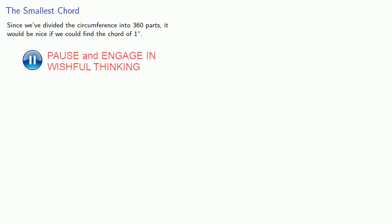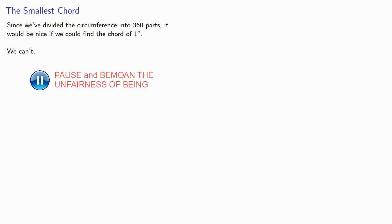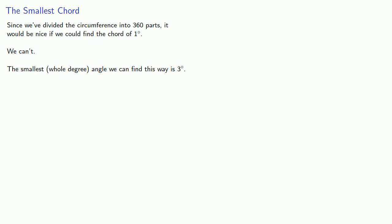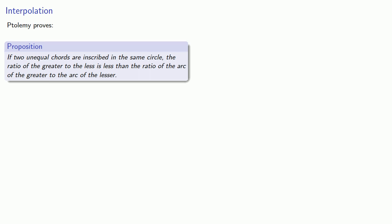Since we've divided the circumference into 360 parts, it would be nice if we could find the chord of 1 degree — but we can't. In fact, the smallest whole-degree angle we can find using Ptolemy's theorem is the chord of 3 degrees. While there's no reason why we have to have the chord of 1 degree, because we are measuring our angles in degrees it would be nice to have it. And so, to get the chord of 1 degree, Ptolemy proves an important approximation theorem.